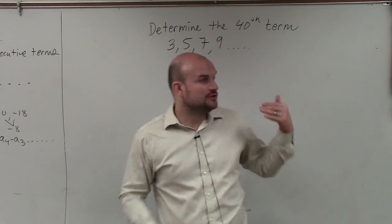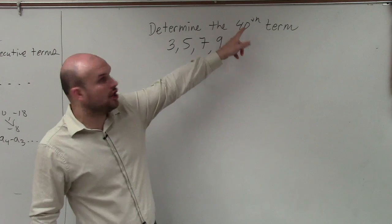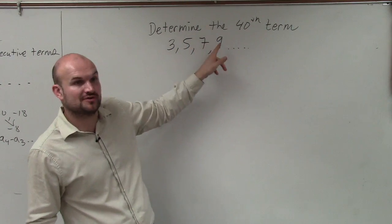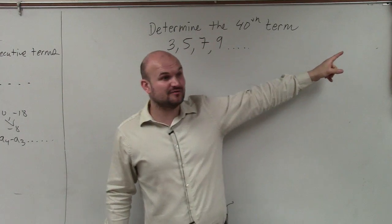So to determine, you could easily just keep on adding 2 all the way up until you get to the 40th term. That's the first term, second term, third term, fourth term. And you could keep on doing that to 40 terms.